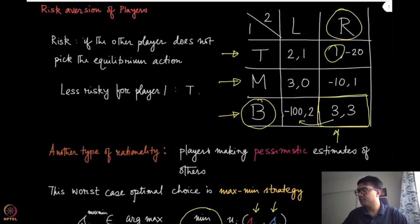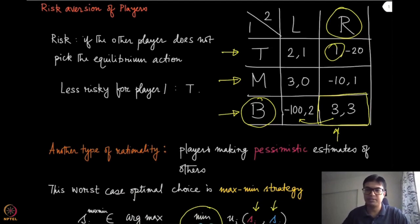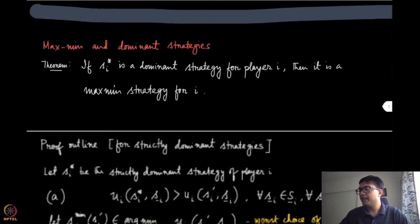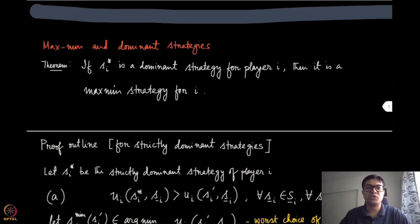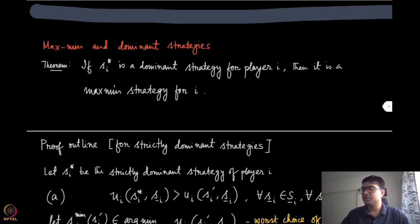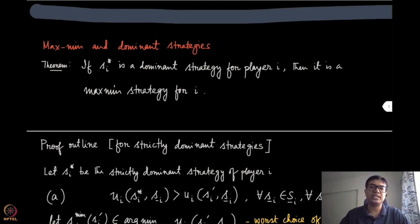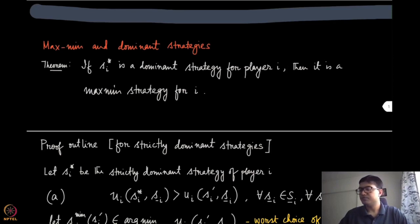In this example, the maximin value for player one happens to be one. Similarly, you can find the maximin value for player two as well. Now we need to understand how this maximin strategy compares with dominant strategies or pure strategy Nash equilibrium. The theorem states: if s_i* is a dominant strategy for player i, then it is also a maximin strategy for player i. In some sense, if you are playing a dominant strategy, you can be safe — even if the other player is not rational and intelligent, you can still guarantee the maximin value.